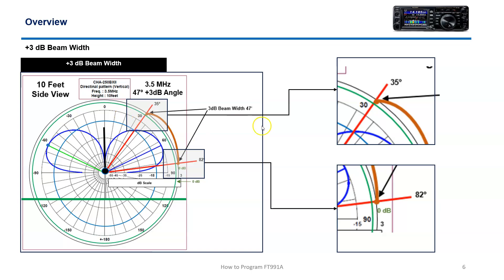The last thing we want to talk about is the plus 3 dB angle. What we're doing is taking the radiation pattern intersection points at the half 3 dB loss and projecting out at a plus 3 dB. That's going to give us a cumulative angle. This angle at plus 3 dB is 47 degrees. So those are the three things we're calculating: maximum radiation angle and dB loss or gain at the maximum lobe, minus 3 dB intersection points on the lobe, and then the plus 3 dB intersection point giving us the beam width.